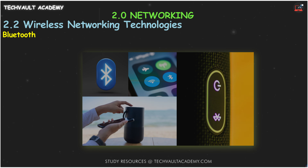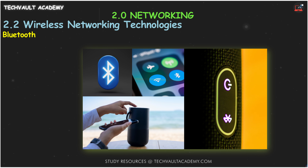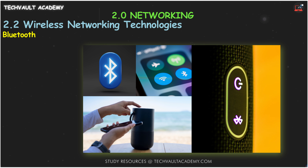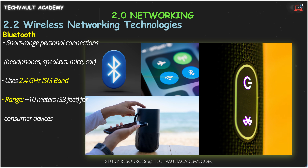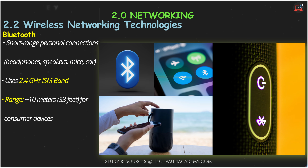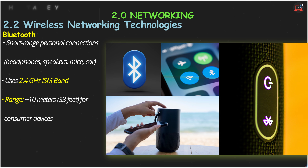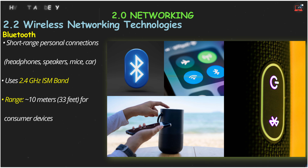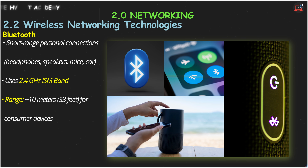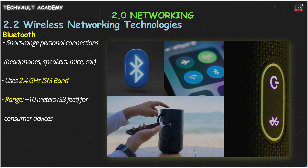Next we have Bluetooth. This is for short-range, personal connections — think wireless headphones, speakers, or connecting your phone to your car. It uses that same 2.4 GHz ISM band. Its range for consumer devices is typically around 10 meters or 33 feet.